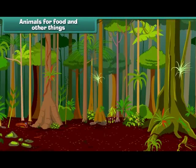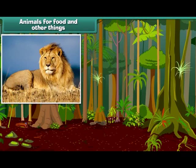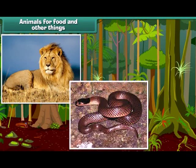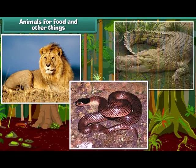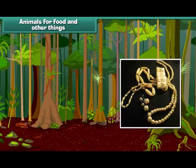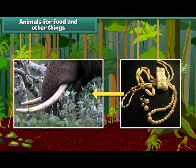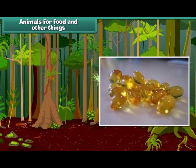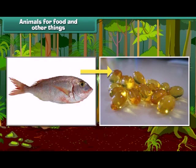Wild animals are useful to us. We get fur and leather from animals like lion, snake, and crocodile. Beautiful ornaments and showpieces are made from elephant teeth. The oil extracted from the liver of some fishes is used in medicines.